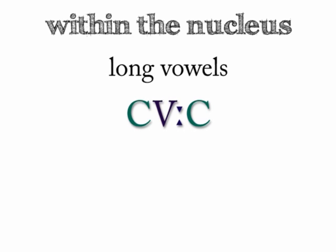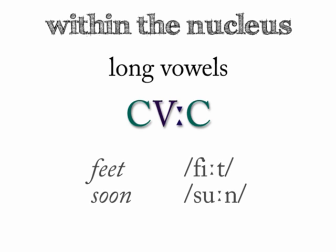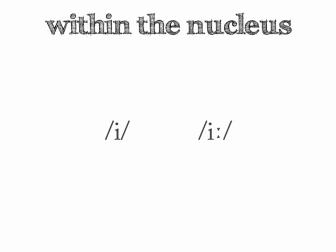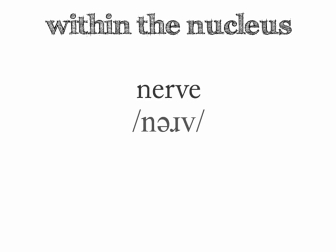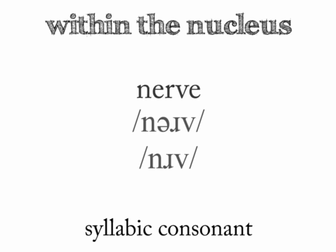Sometimes the vowel in the nucleus is simply held longer — it's the same vowel, but held out for a longer time. You can represent such long vowels in the IPA with a double mark after the vowel, so the vowel e can be lengthened to ee. A consonant may also sit inside the nucleus of a syllable instead of a vowel. Take the English word 'nerve' — some speakers pronounce it with an r as the syllable nucleus. When writing syllabic consonants in IPA, it's conventional to place a small stroke beneath the consonant to signal that it's acting as the nucleus.